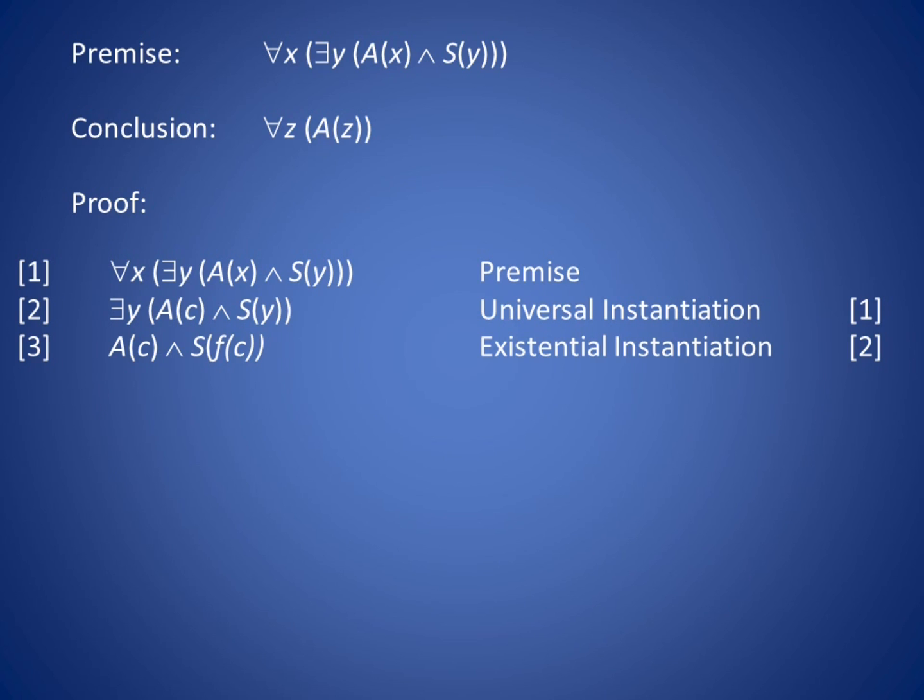Then, on line 3, we would like to existentially instantiate the y to some particular element, but we see that the existential quantification was within the scope of universal quantification. That is, the y must depend upon the c. So, we must introduce a Skolem function f, describing a particular y associated with c. We represent this particular y as f of c. So, we have A of c and S of f of c.